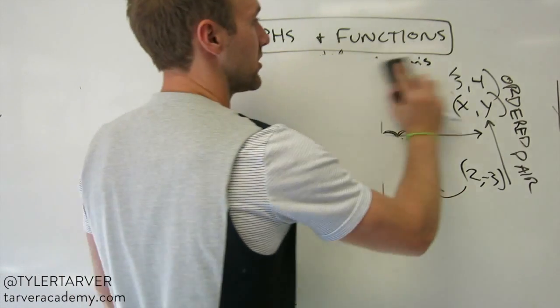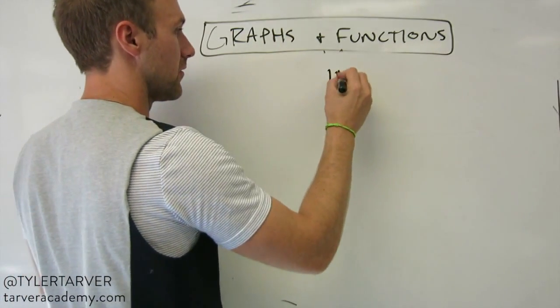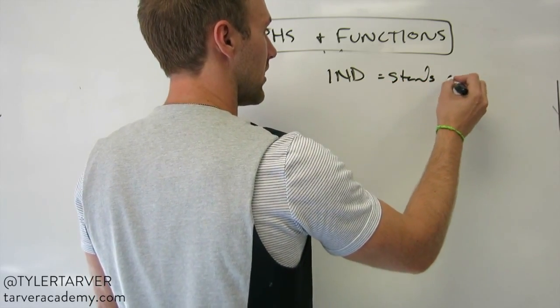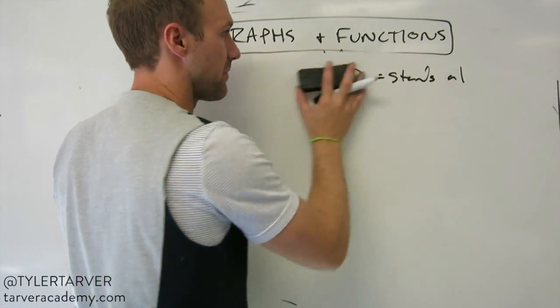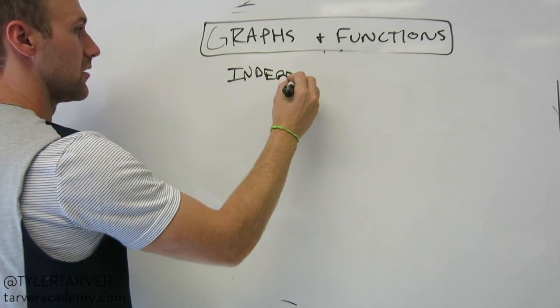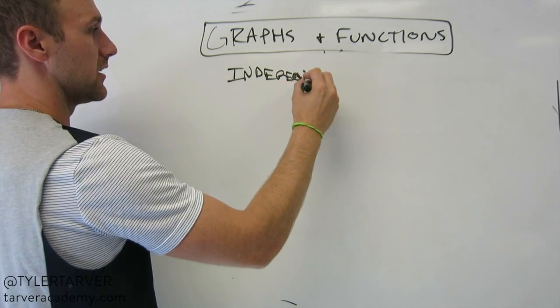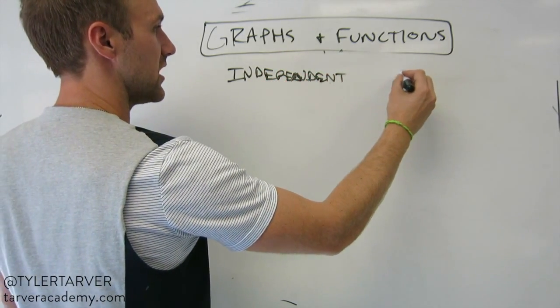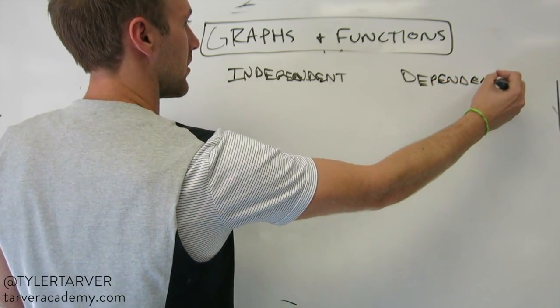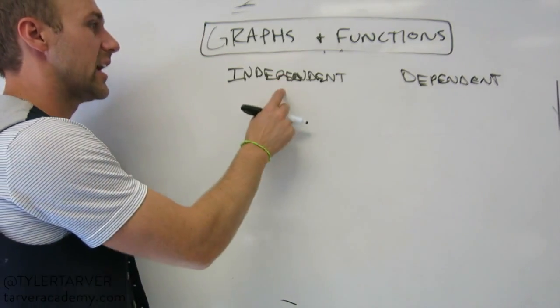Cool. I want to talk about independent and dependent variables. Independent. An independent variable means it stands alone. Actually, let me do it this way. You've got your independent variables. Independent. And then you've got your dependent. Is it int or ant? I don't know. If it's not, tell your teacher. I'm sorry. Independent and dependent.